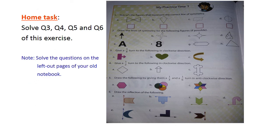So I hope that rotation and reflection are now clear to you all. What we learned today: reflection is the mirror image, the water image, or the flipped image over the line of reflection. Rotation is when a figure is turned in a clockwise or anticlockwise direction without changing its shape or size. Here is a home task for you all: solve questions 3, 4, 5, and 6 of practice time 1 of this chapter. Thank you.